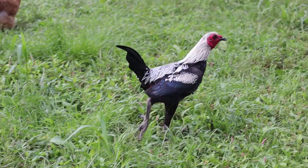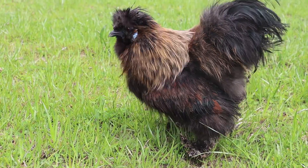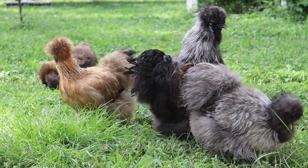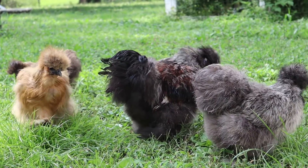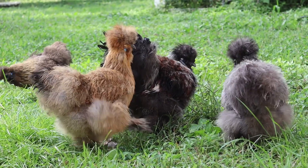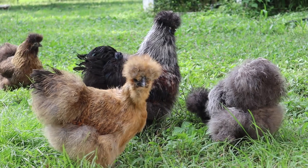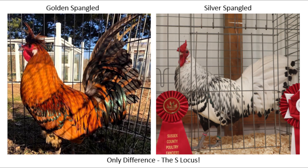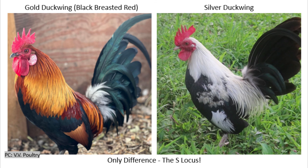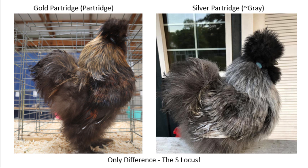Overall, an understanding of the silver and gold gene is very important in understanding how varieties are made. There are a lot of varieties out there that are identical in every way except the silver and gold gene, meaning if you needed to improve on other traits, you could breed a silver-based bird to its nearly identical gold-based counterpart and vice versa. Some examples where this can be done include golden-laced or silver-laced, gold-spangled and silver-spangled, silver duckwing and black-breasted red (which is genetically gold duckwing), silver birchen and brown red (which is genetically gold birchen), partridge (gold and silver partridge), and so much more.